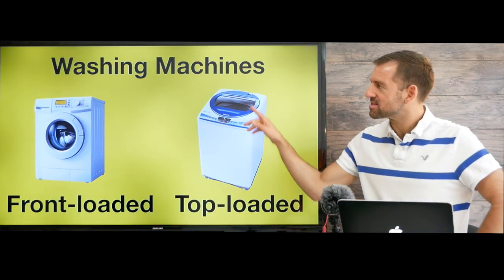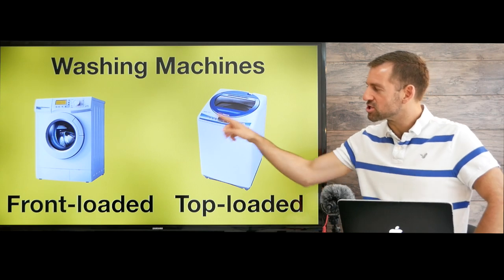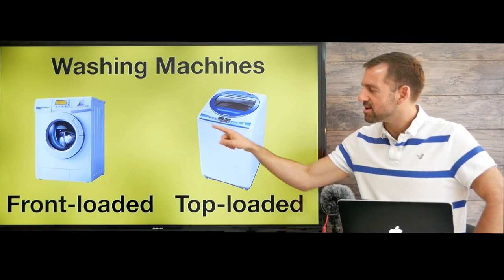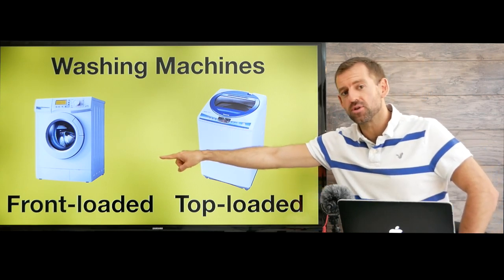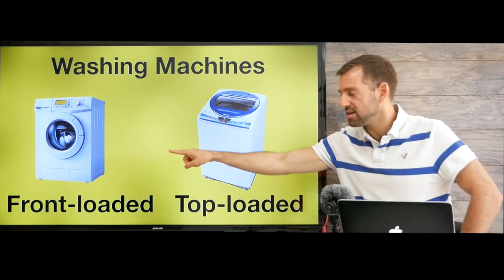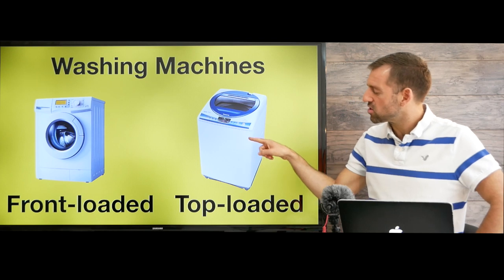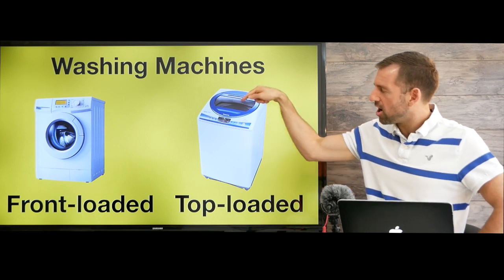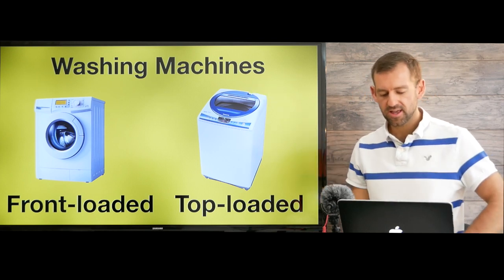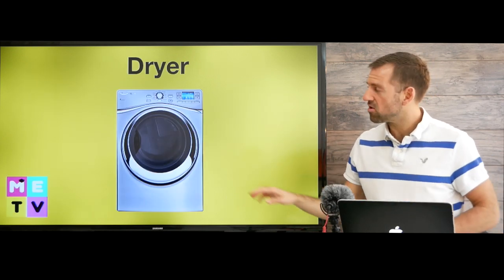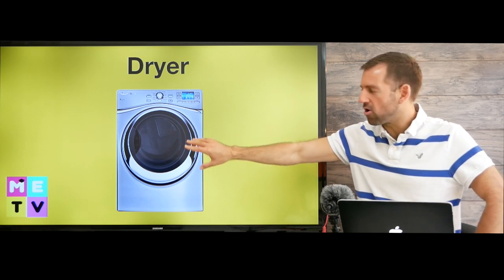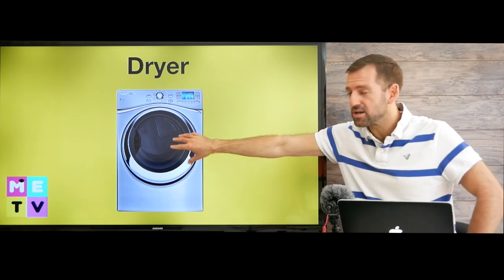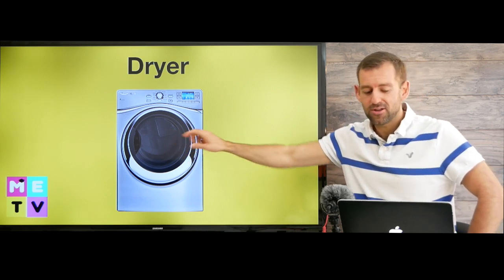Now here we have some washing machines. This is called a front-loaded washing machine and this is called a top-loaded washing machine. This is called a dryer. All dryers are front-loaded.